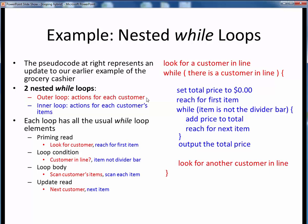So now we have two nested while loops: an outer loop for each customer in line, and an inner loop for each customer's items. But each of these individual loops has all the standard while loop elements. For the outer loop, the priming read is to check for a first customer in line, the loop condition checks whether there are any customers in line, the loop body performs all the inner loop actions, and the update read becomes checking for another customer in line. If you look for the general pattern among all the specific details, we see that each while loop has an identical basic structure.